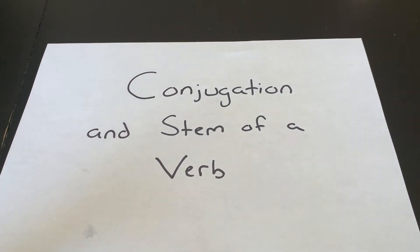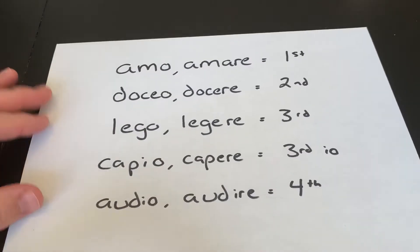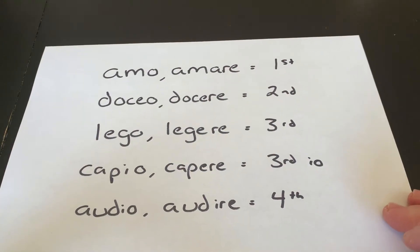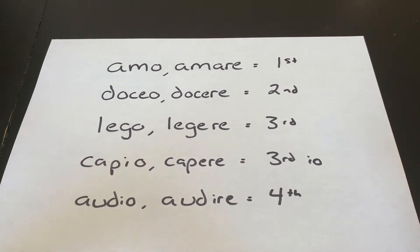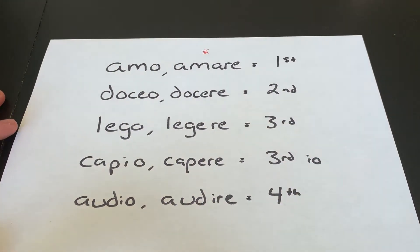In this video we're going to talk about how you identify the conjugation of a verb and then how you form the different stems for those conjugations. So first let's talk about identifying the conjugation. We have four conjugations, well five if you include third IO, but the way you're going to identify the conjugation is by first looking at the second principal part.